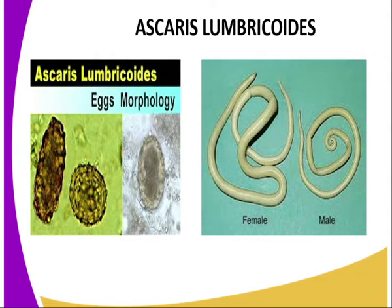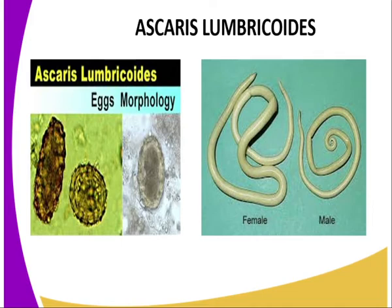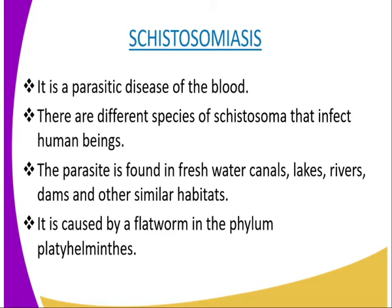Ascaris lumbricoides has adaptive characteristics which enable it to survive. First, it has two hosts — human beings and pigs — ensuring it always has a ready host for survival. Second, it may lay many eggs to increase the chances of survival, even when some are destroyed. The eggs also have a protective shell to survive harsh environmental conditions. It has a thick elastic cuticle which protects it against the digestive enzymes of the host, enabling it to survive in the alimentary canal. It also has tissue tolerant to low oxygen concentration, a characteristic of the gut. Finally, it has a muscular pharynx through which it sucks digested food from the host's intestine into its own gut.